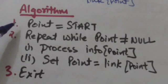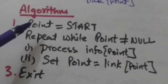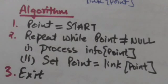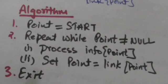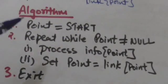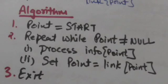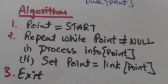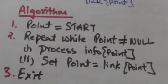In the first step of this algorithm, the value of start is assigned to pointer variable point. Now point points to the first node of the linked list L. While point is not equal to null, these two steps will be repeated. In the first step, the information at the node pointed by pointer variable point is processed. In the second step, the address of the next node to be processed is assigned to the pointer variable point.